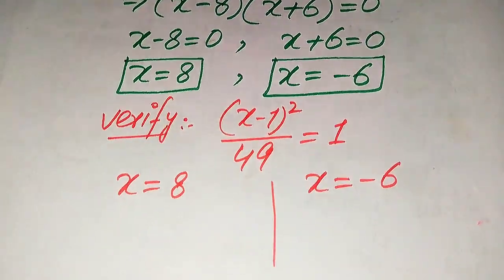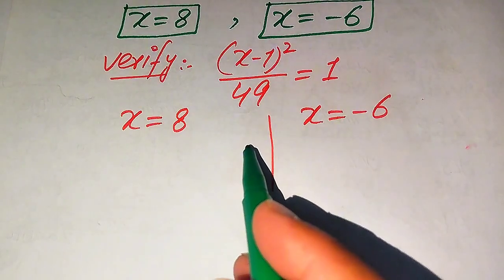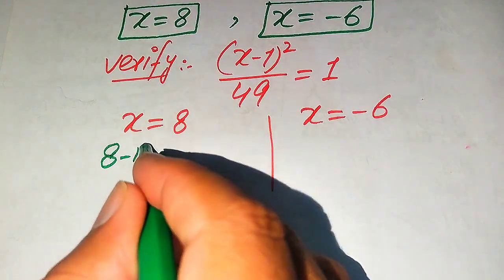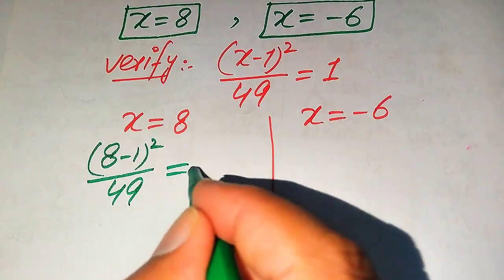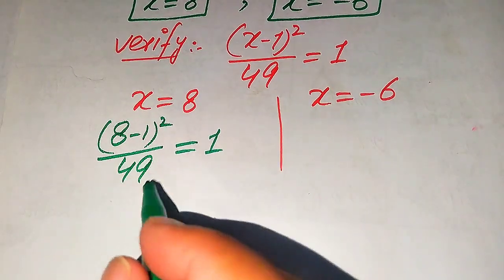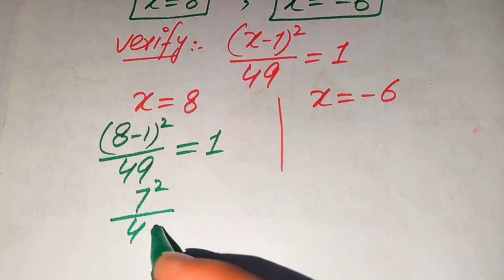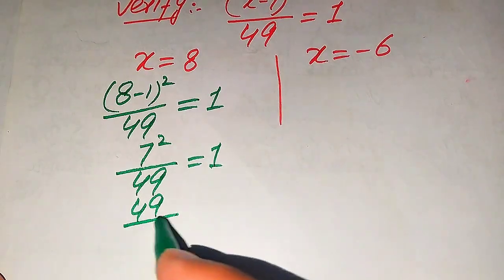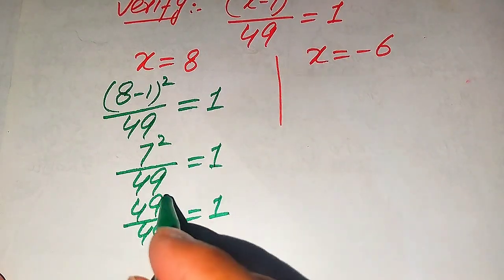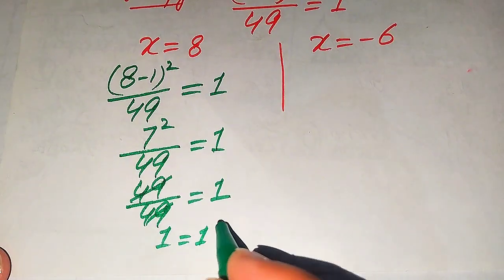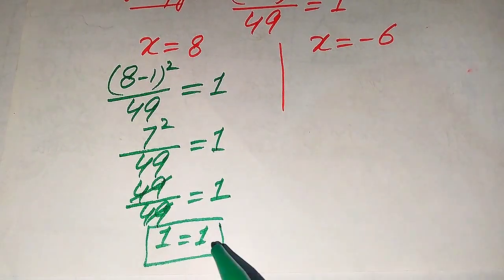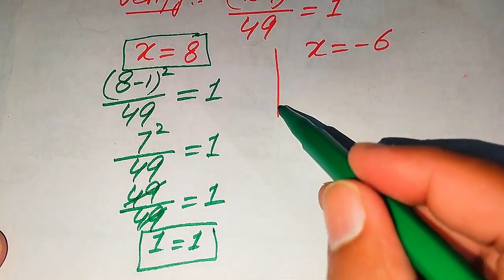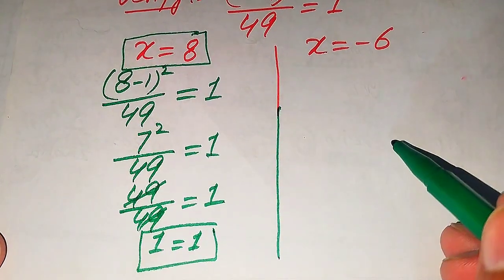First we substitute x equals 8 into the left hand side. It becomes (8 minus 1) whole square divided by 49, which equals 1. Then 8 minus 1 becomes 7, so 7 squared divided by 49 equals 1. Since 7 squared is 49, we get 49 divided by 49 equals 1. These cancel out and we get 1 equals 1. This confirms that x equals 8 satisfies the given equation.